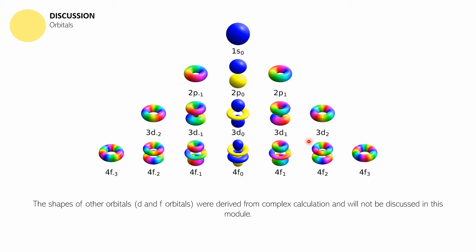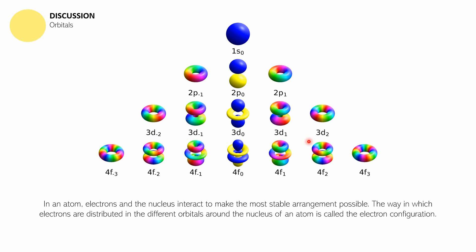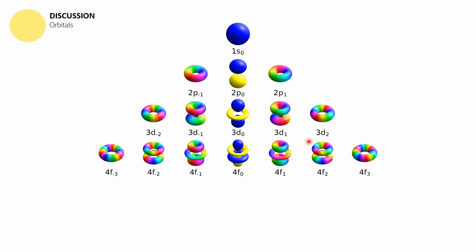The shapes of the other orbitals such as d and f were derived from complex calculations, and we are not going to discuss them in this series. In an atom, electrons and the nucleus interact to make the most stable arrangement possible. They are in constant interaction. Electrons are in constant movement because they want to have the best orientation, the best arrangement possible. The way in which electrons are distributed in the different orbitals around the nucleus of an atom is called the electron configuration.